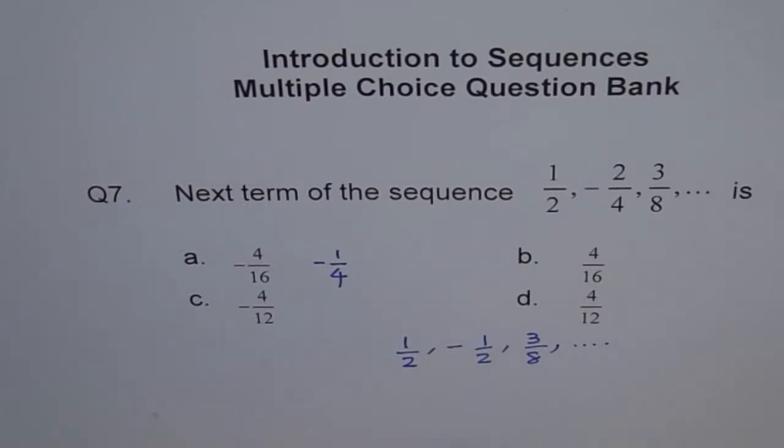Now, think about this. I give you this sequence as this. Half, and then minus half, and then 3 over 8, and then the next term.